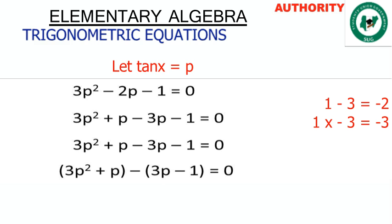So we split the middle term: 3p² + p minus 3p minus 1 equals 0. Check: p minus 3p gives minus 2p, which matches. Now let's group them two by two: (3p² + p) minus (3p + 1) equals 0.